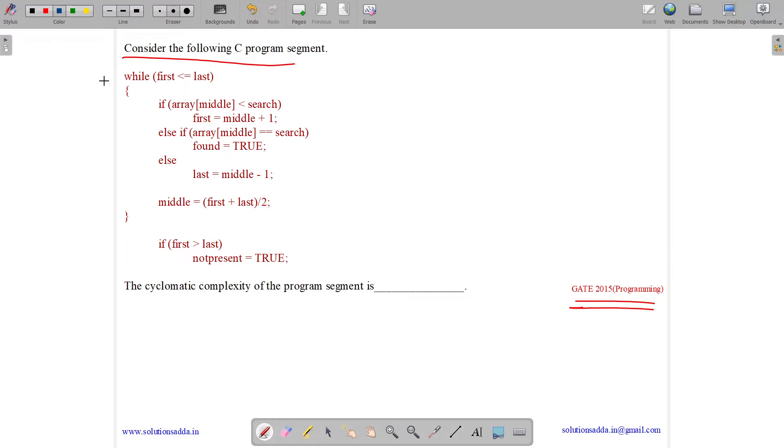So this is the program for binary search. We have Y, we have an array, we have a first and a last. While first is less than last, we find the middle element. If array of middle is less than our search item, we increment our first to middle plus one.